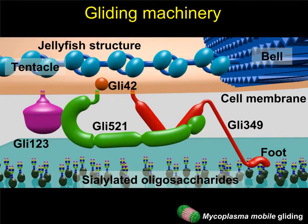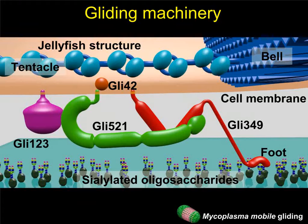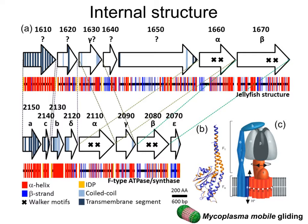The internal structure is motile. Interestingly, the proteins of the internal structure shown in the upper panel have clear similarity to the rotary F-type ATPase shown in the lower. This suggests that the gliding system developed by the accidental combination of surface adhesion and the rotary ATPase on the membrane.